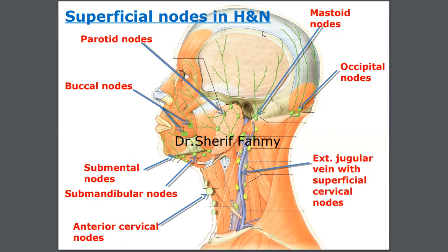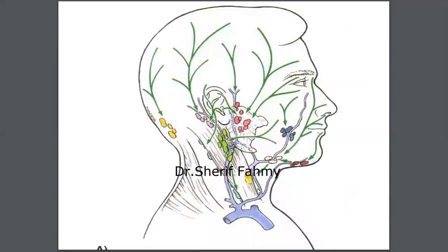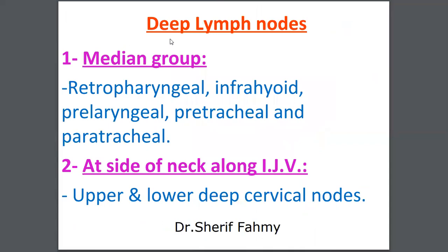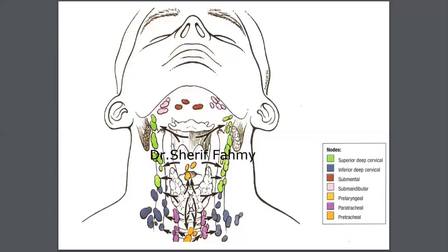All these lymph nodes are superficial nodes in the head and neck region. We also have lymph nodes around the external jugular vein, which are also a superficial group. All these superficial group of lymph nodes will drain into the deep group of lymph nodes — the deep cervical group. In the midline we have retropharyngeal, infrahyoid, pre-laryngeal, pre-tracheal, and paratracheal lymph nodes.